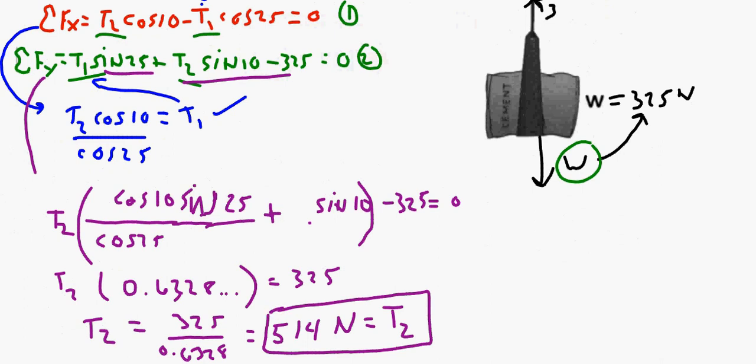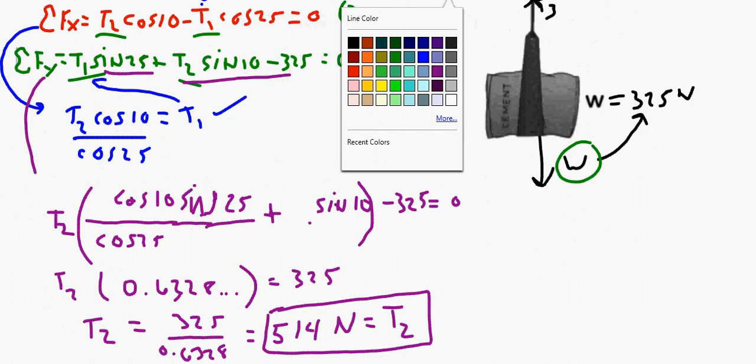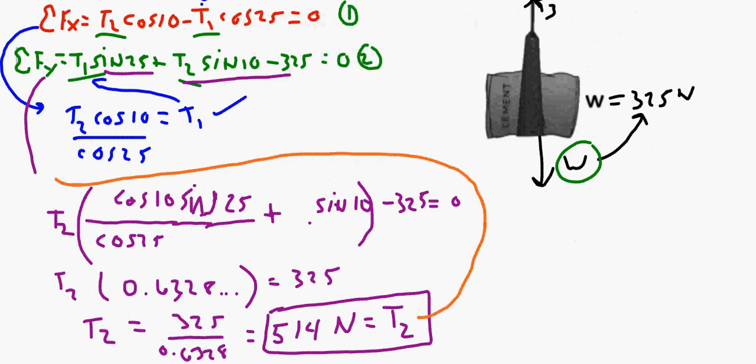Now that I know the force in T2, I can take this number and plug it in right here and figure out what the force in T1 is, just by taking that number, multiply by the cosine of 10, and divide by the cosine of 25.